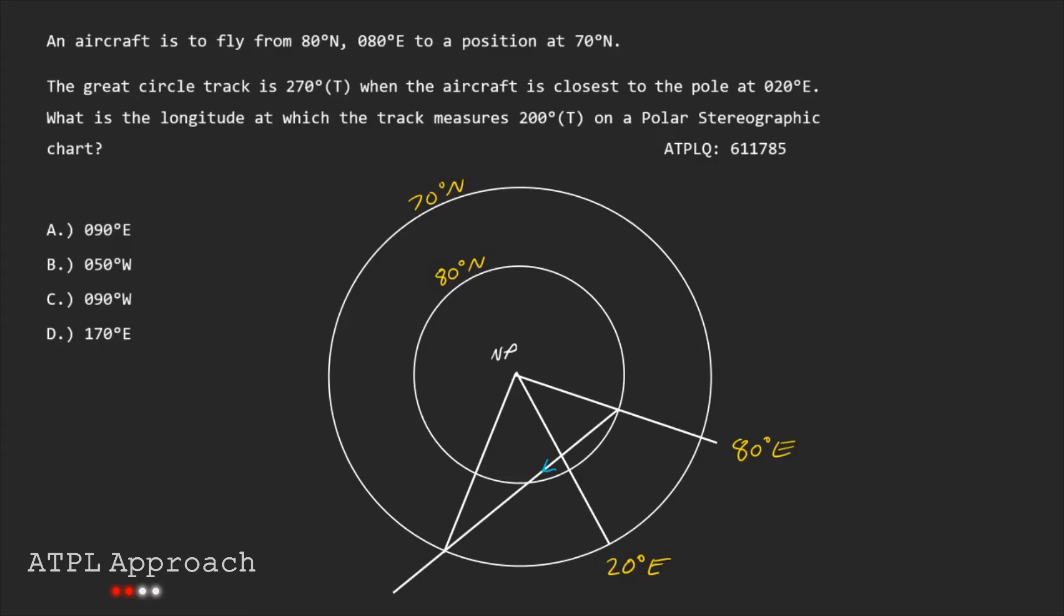So now it's asking us what the longitude is where the track measures 200 degrees true. Well let's take a look at how the track changes from our starting position to our ending position there. Well if we look at all three of these lines that I've drawn on here we know that north is always pointing towards the north pole. So at 80 degrees east our first track will be given by this angle here and we can see that it's a lot bigger than 200 degrees. Well the next track at 20 degrees east we're actually told it's 270 over there. So you can see that when we go from 80 degrees east to 20 degrees east our track has got smaller and it'll carry on doing that until we reach 70 degrees north. So we want the longitude where the track measures 200 degrees true.